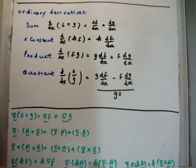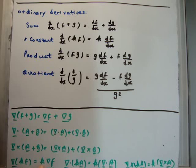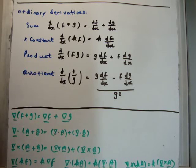There are three more to show. If we take the gradient of f multiplied by a scalar, it's the same as multiplying the gradient of f by the scalar. Similarly, if we take the divergence of a vector a multiplied by a constant k, it's the same as multiplying the scalar k by the divergence itself. A similar rule follows with the curls.